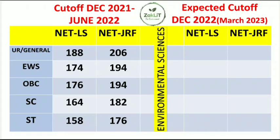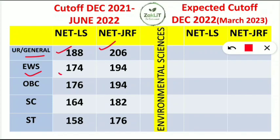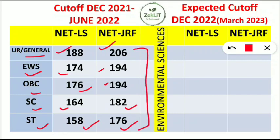That is the March 2023 exam which took place. Last time, for the General/Unreserved category, the NET LS cut-off mark was 188 and NET JRF was 206. For EWS, LS was 174 and JRF was 194. For OBC, NET LS was 176 and NET JRF was 194. For SC, NET LS was 164 and NET JRF was 182. For ST, NET LS cut-off was 158 and NET JRF was 176. This was the maximum cut-off which went for the Environmental Science paper.